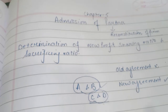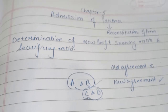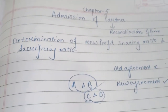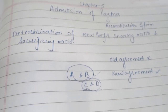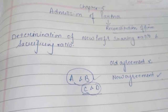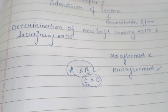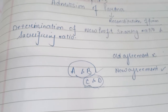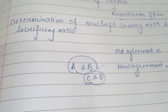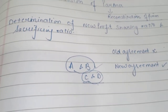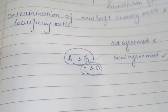At the time of admission of a partner, one very important thing is the determination of new profit sharing ratio. There are different cases, and depending upon the language of the question, we need to solve it accordingly. So let's understand how to calculate the new ratio and the sacrifice ratio.